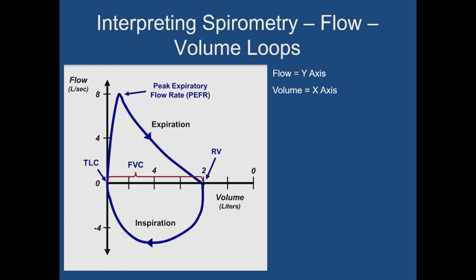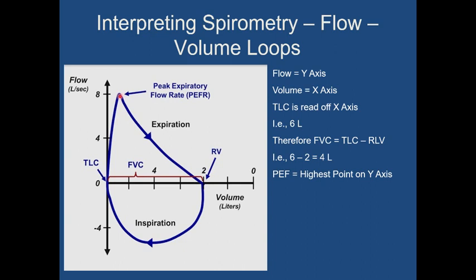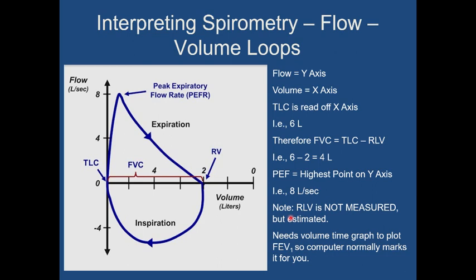When the patient cannot blow out any more, we have reached residual volume, and the distance from total lung capacity to residual volume is the forced vital capacity. FEV1 isn't directly marked on the flow-volume loop because there is no time axis, but the computer knows how long everything is taking and will plot it for you. Reading this graph: total lung capacity is read off the x-axis — for example 6 litres — residual lung volume might be 2 litres, giving an FVC of 4 litres, and peak expiratory flow is 8 litres per second read off the y-axis.